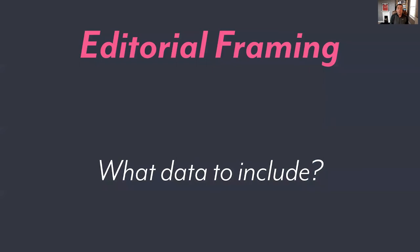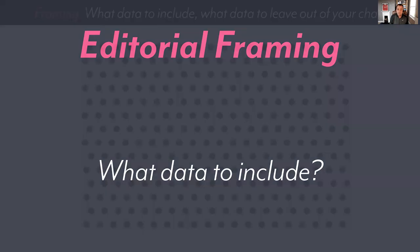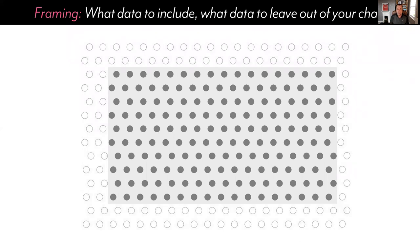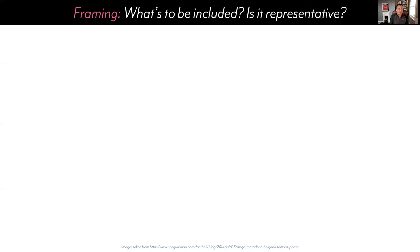Secondly, editorial framing: what data to include, and by extension what data to leave out. Because you might have lots of data to work with — it doesn't mean you have to or should use it all. There may be a reasonable rationale for narrowing this frame. Think of photography again: what's in the frame of your photograph? We can leave things out, we can leave things in. What's representative of the truth? What is a faithful representation of your data? Because sometimes we can leave things out that were quite important.